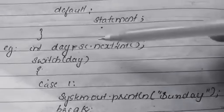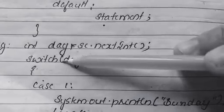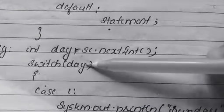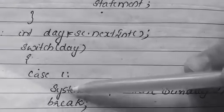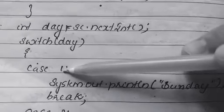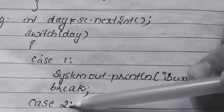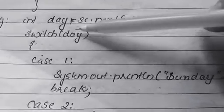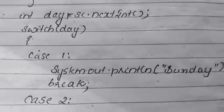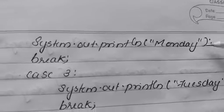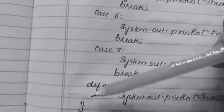Suppose a user enters the day number as 2, so the value in day is 2. We enter the switch statement — switch(day), the value is 2. It is compared with case 1: 2 does not match 1, so the control goes to the next case. It compares with case 2: 2 equals 2, so the statements in case 2 are executed. The message Monday is printed.